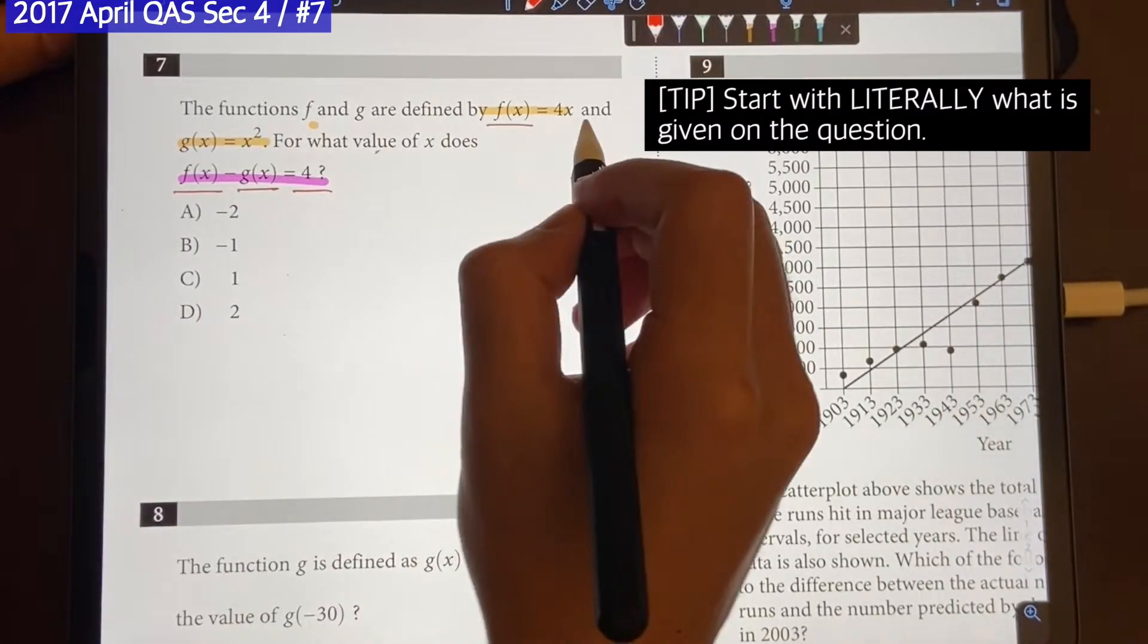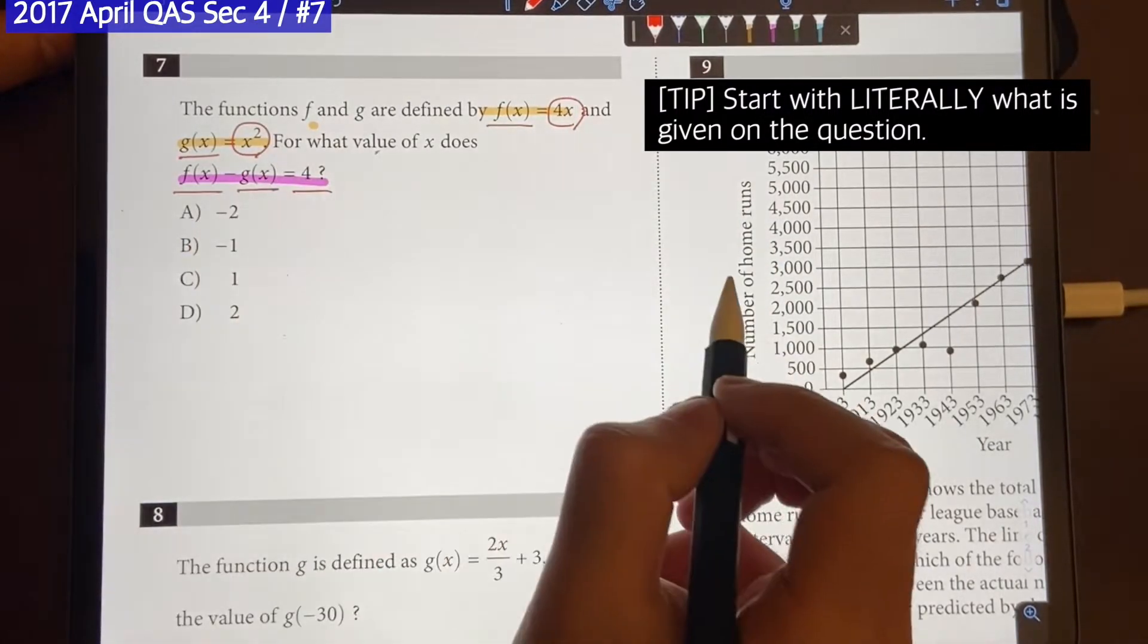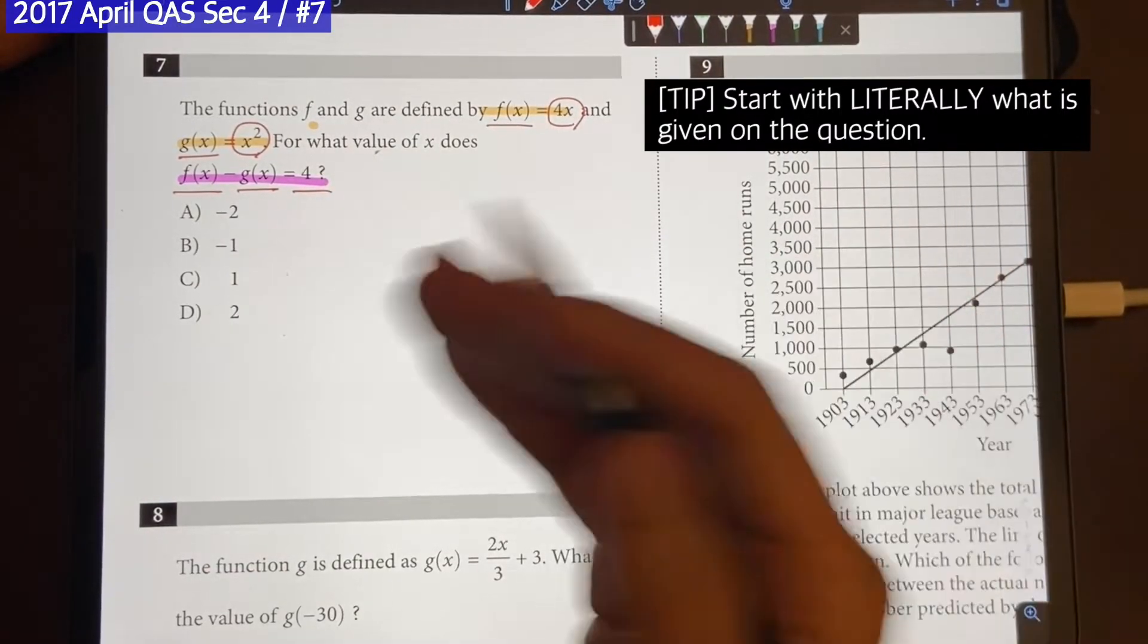f of x, you see f of x here, and it's 4x. And g of x, g of x, and we know it's x squared. So just substitute them in, and it might open new doors that you just couldn't see before.